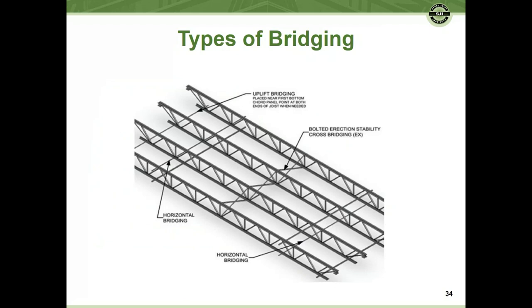There are three kinds of bridging. First, bolted erection stability bridging, required before the joist is released from the hoisting cable — it provides lateral support during construction. Second, horizontal bridging, which provides lateral stability to the joist and/or the bottom chord both during construction and in service. Third, uplift bridging — a horizontal piece at the first bottom chord panel point that provides stability when the bottom chord goes into compression during an uplift condition.